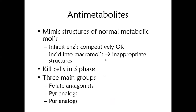Anti-metabolites mimic the structure of normal metabolic molecules. Normal metabolic molecules include things like folic acid. Cancer cells get confused and use the drug instead of the normal metabolite, causing the cell to malfunction and die. Anti-metabolites inhibit enzymes competitively or get incorporated into macromolecules, causing inappropriate structure and arresting cells in S phase. The three main groups are: folate antagonists, pyrimidine analogs, and purine analogs.